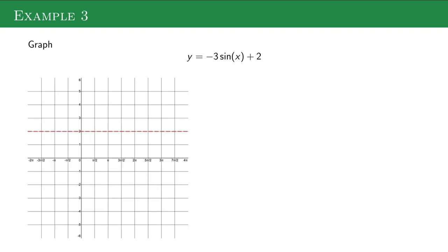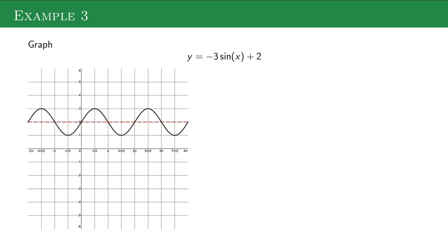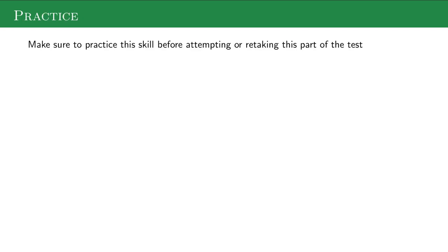And one more, same thing. 2 is the midline. Sine, make the heights 3, and the negative flips them. So my final graph looks like this. I've moved it up and I have sine going the opposite direction because of that negative. Those are our first two types of transformations we looked at with sine and cosine.